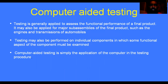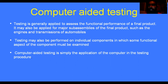Computer-aided testing is generally applied to assess the functional performance of the final product. This is why we use computer-aided testing — to test any object. It may also be applied to major sub-assemblies of the final product, such as engines and transmissions of automobiles. These are some of the applications of computer-aided testing.